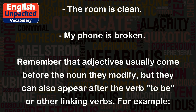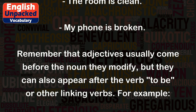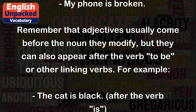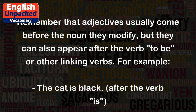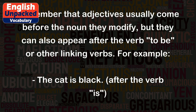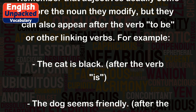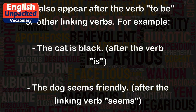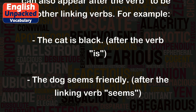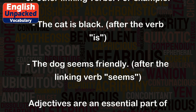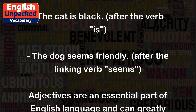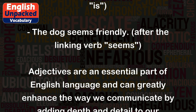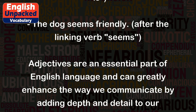Remember that adjectives usually come before the noun they modify, but they can also appear after the verb 'to be' or other linking verbs. For example: 'The cat is black' — after the verb 'is'. 'The dog seems friendly' — after the linking verb 'seems'.